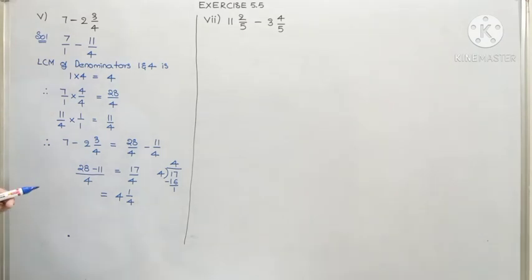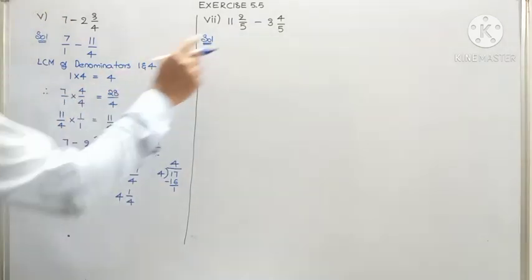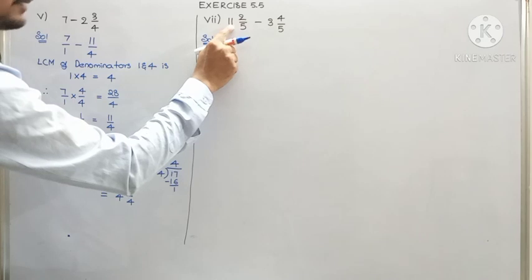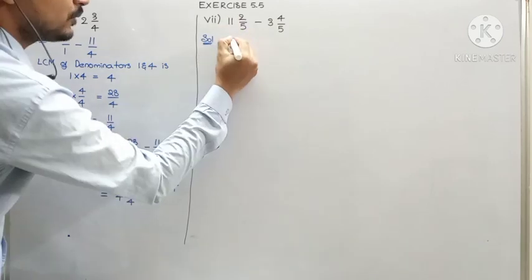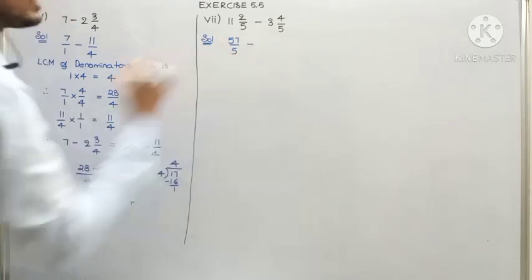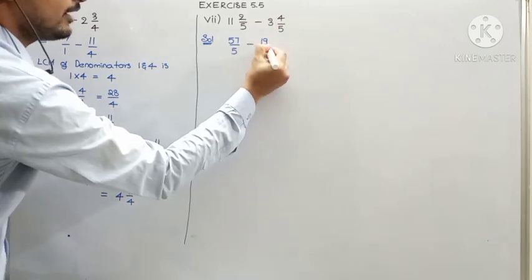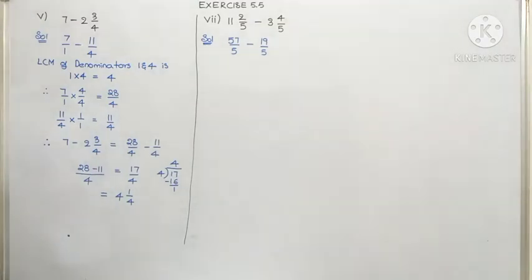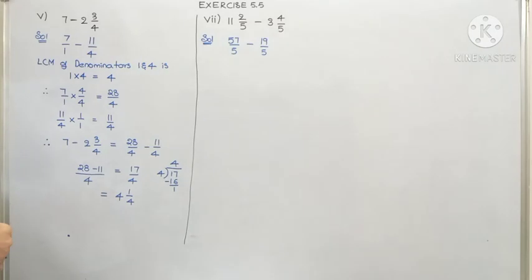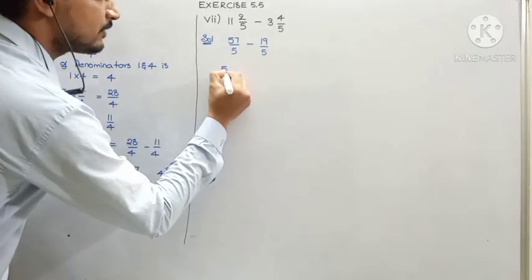Look here — both are mixed fractions, so as a first step we convert them. 5 times 11 is 55, 55 plus 2 is 57, so 57 by 5. Minus: 5 times 3 is 15, 15 plus 4 is 19, so 19 by 5. The good thing here is that both are like fractions, hence there is no need of finding the LCM process to get the answer, as we already have the common denominator 5.